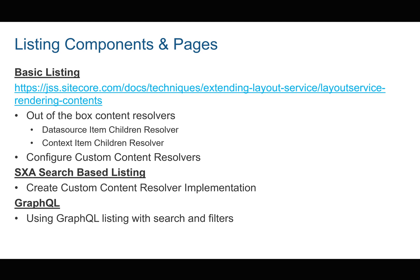For example, if I have a listing page — an article listing page — and I want to read all the sub-items because these are my articles, I'd probably use the context item children resolver. Whereas if I want to show featured news with a data source item, I might use the data source item children resolver.